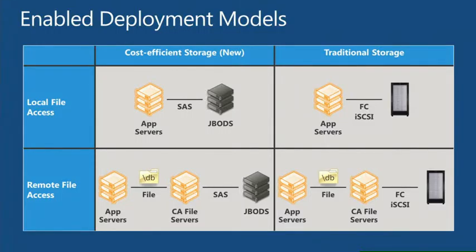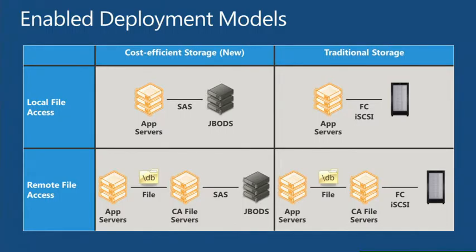We have the traditional way to deploy storage: an external storage subsystem attached to Windows servers through a storage area network, typically Fiber Channel or iSCSI. Once attached, you have the opportunity to run workloads locally — app servers using local file access — or use file shares on servers connected to storage and access files remotely, with separate file servers and separate app servers.